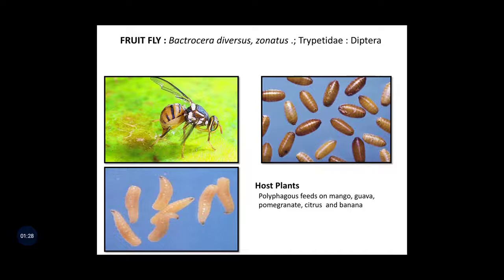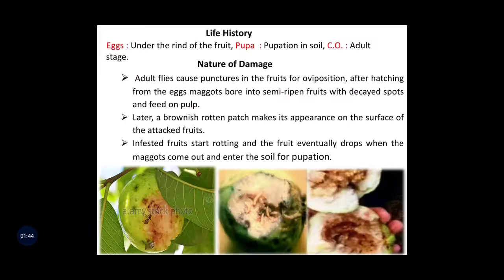The host plant of this pest: this pest is polyphagous and feeds on mango as well as guava, pomegranate, citrus, and banana. The next point is life history. The eggs are deposited under the rind of the fruit, pupation takes place inside the soil, and the carryover stage of this pest is adult.